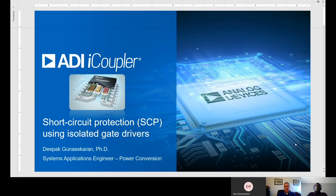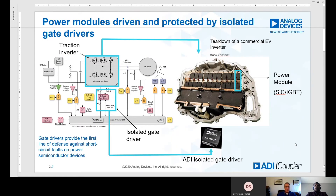Just to get started, can you give an example of an ADI device with short-circuit protection features and maybe a typical application it would be used in? A typical application for the short-circuit protection feature would be in a traction inverter. If you look at the figure here, this shows the overall block diagram inside a traction inverter, and we are really interested in protecting these silicon carbide or IGBT devices in this inverter.